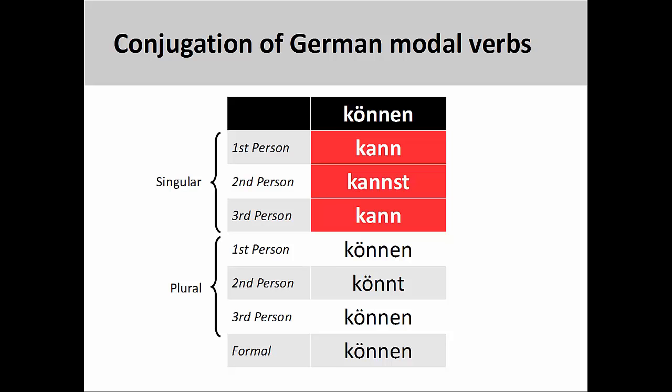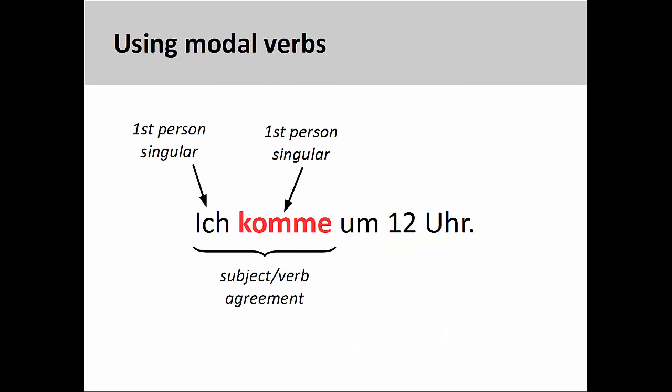We will take a look at the different meanings of these modal verbs and how to use them in a sentence in a later presentation. At this point, I would instead like to demonstrate how to use modal verbs in a sentence. In the sentence you see here, 'ich komme um zwölf Uhr' — 'I am coming at 12 o'clock' — the verb 'komme' is in the second position and there is subject-verb agreement between the first person singular personal pronoun 'ich' and the first person singular verb form 'komme'.